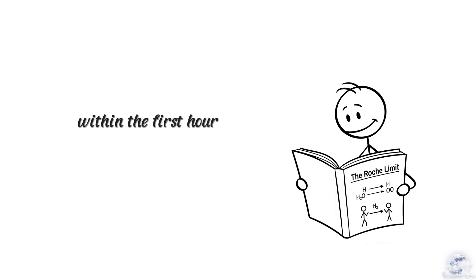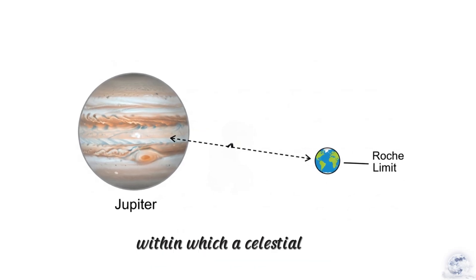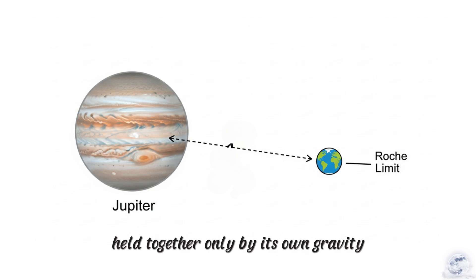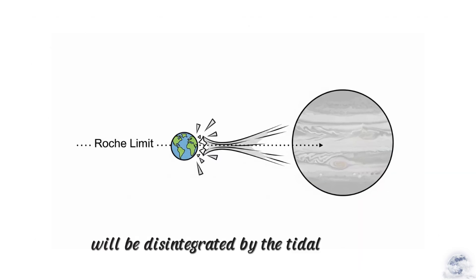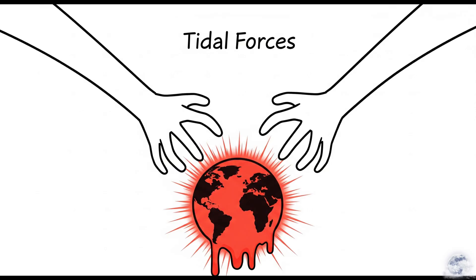Within the first hour, we'd encounter the final problem: the Roche limit. The Roche limit is the distance within which a celestial body, held together only by its own gravity, will be disintegrated by the tidal forces of a second, larger body. In short, gravity holds you together, but the tidal force from something huge and close can pull you apart.